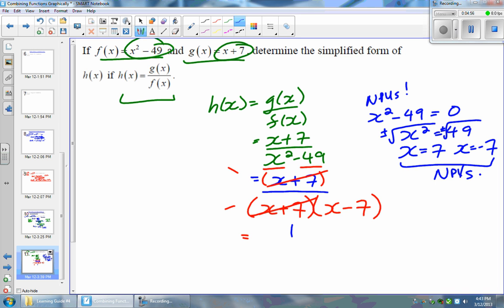I'm going to be left with 1 on the top and x minus 7 on the bottom. So this is my h of x function. But remember, you need to state those NPVs. So x cannot be 7 and also x cannot be negative 7. So that concludes part 3 of combining functions algebraically.